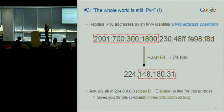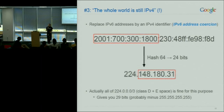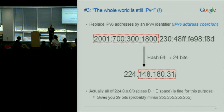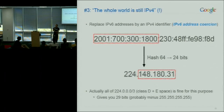That leads us to the strategy of IPv6 address coercion. In our case, we take the first 64 bits of an address, hash it, and squeeze it into unused IPv4 space — for example, class E space or localhost space. It's an ugly and hideous hack, but it actually works really well.